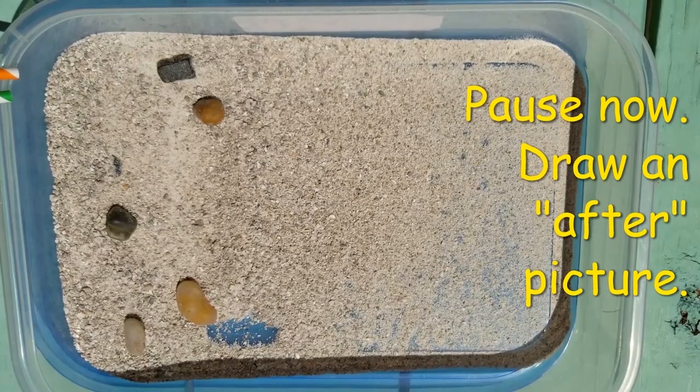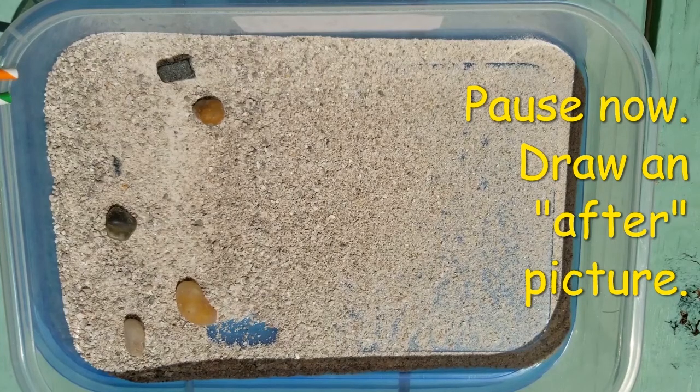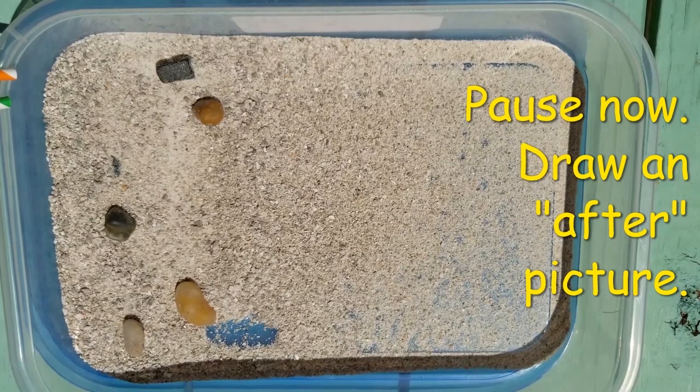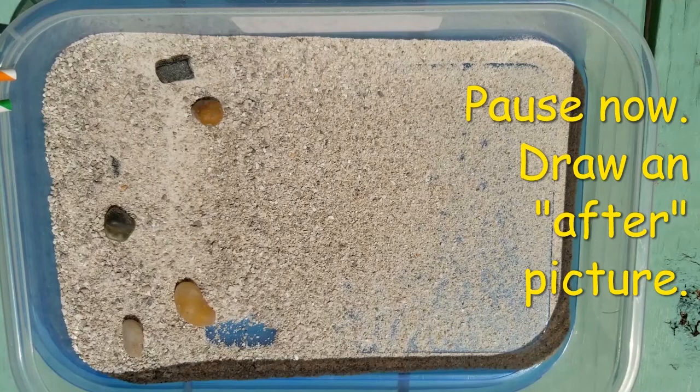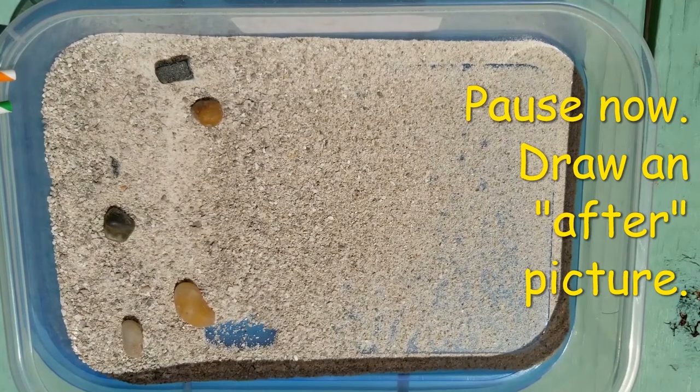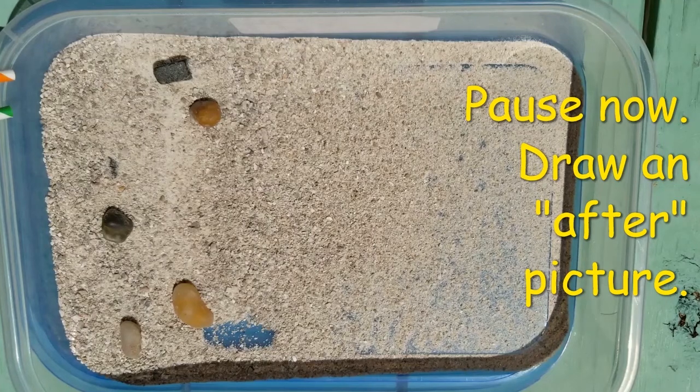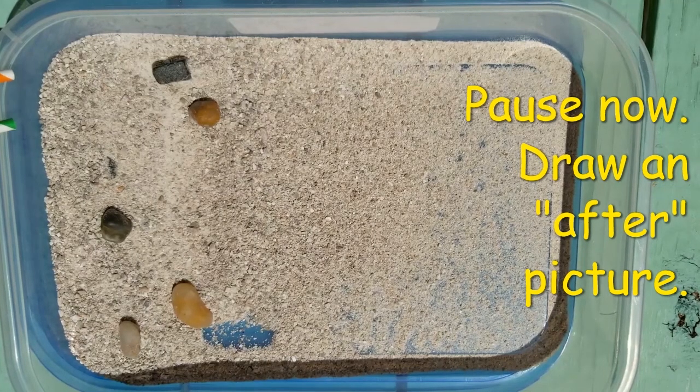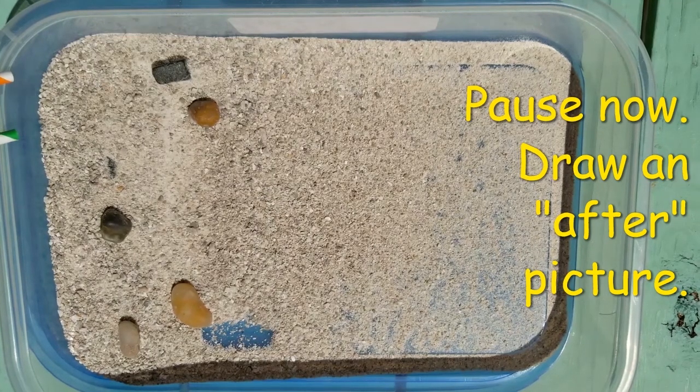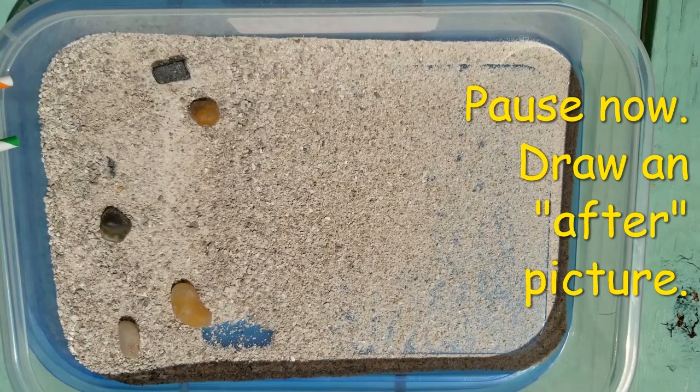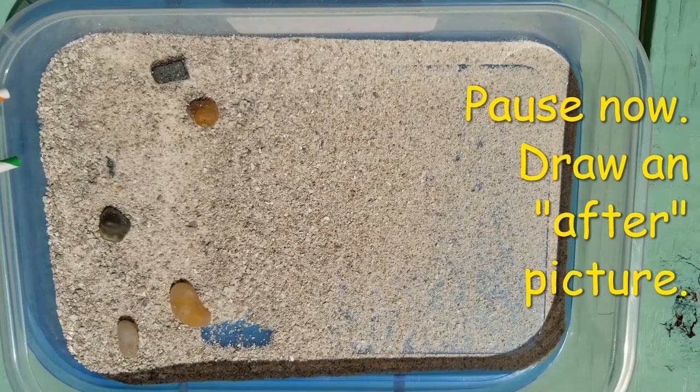Now that the model is complete, we can pause the video to do the final two parts of our worksheet. First, draw an after picture. This is going to allow you to compare it to your before picture, and then you can answer your final question. Was your hypothesis correct? Did the landscape change in the way you expected it to?